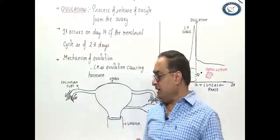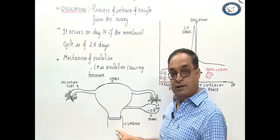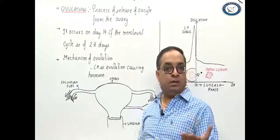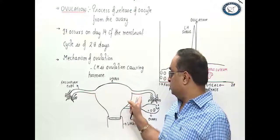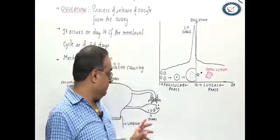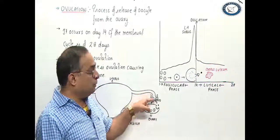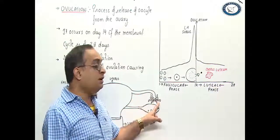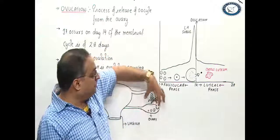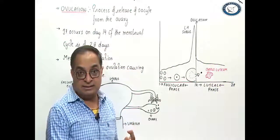As you can see in this diagram, this is the uterus, this is the vagina, and the lower narrow portion of the uterus is called cervix. These are the two fallopian tubes. The ovary is shown on one side, and these finger-like processes are fimbriae, which are supposed to capture the released oocyte.